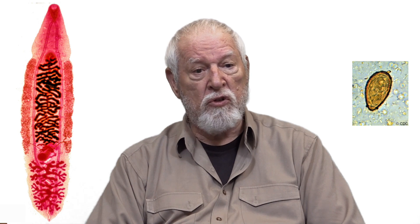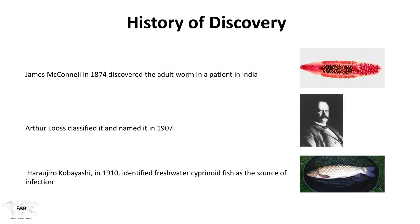Its history of discovery involves James McConnell describing the adult worm isolated from a patient in India — because South Asia has some infection as well. Artholose actually described the parasite in detail and named it. Remember, Artholose was also important in the discovery of hookworm disease. And finally, Haryujo Kobayashi in 1910 identified the freshwater cyprinoid fish, which were raised in captivity in fish farms, as the primary source of infection.